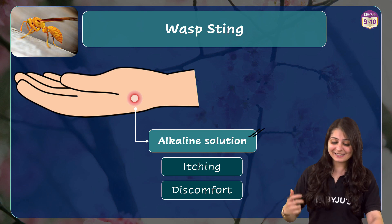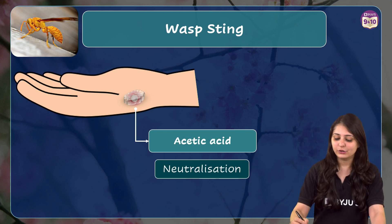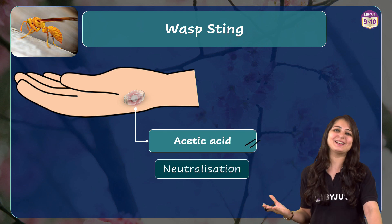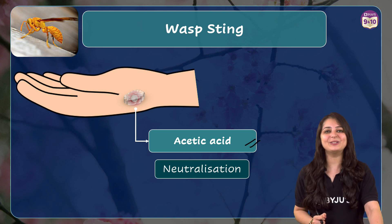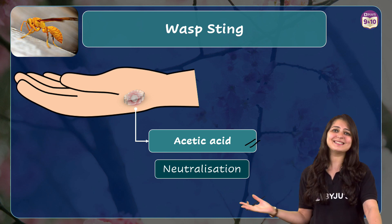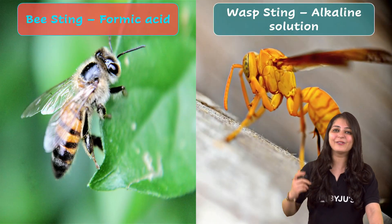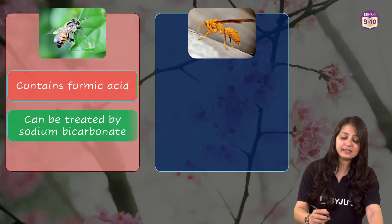Now if you apply baking soda, which is a mild base, you'll experience more pain and irritation — and you don't want that! You actually need an acid to nullify the effect of the alkaline solution. So you can go ahead and apply acetic acid, that is CH₃COOH, to get relief. And ta-da — now you know the difference between a bee sting and a wasp sting!